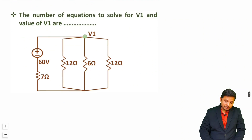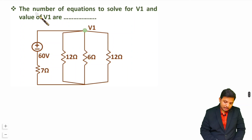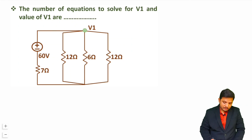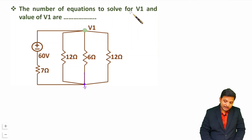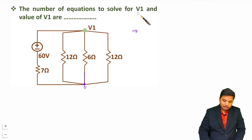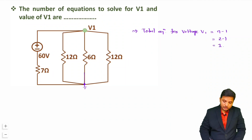Now let us have the second question. The number of equations to solve for v1 and the value of v1 are what? If you observe this graph, we have one node v1 and a second node which is ground. This circuit has two nodes, so the number of equations required is number of nodes minus 1, meaning just one equation is needed to solve for v1.